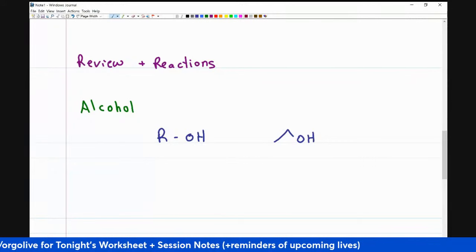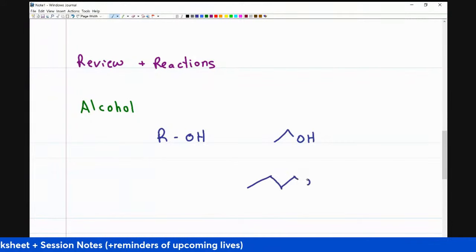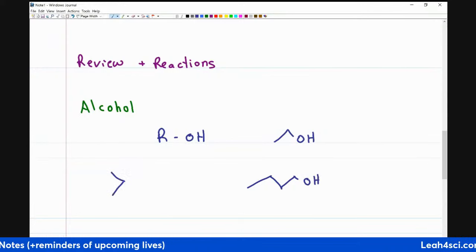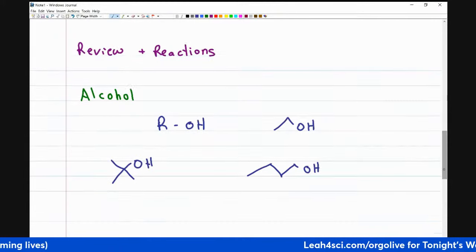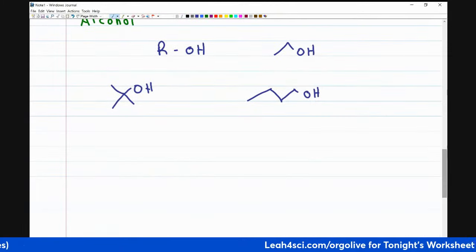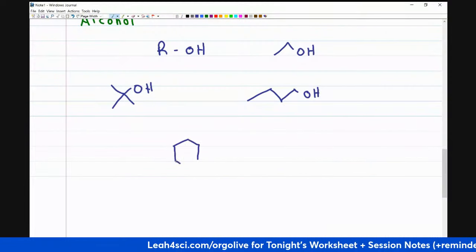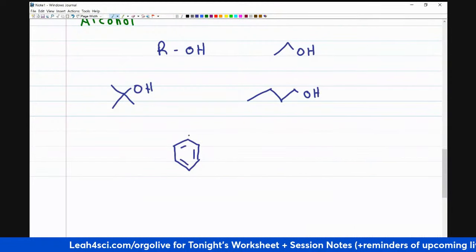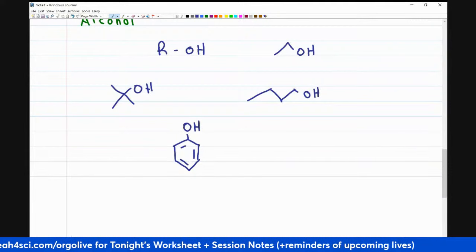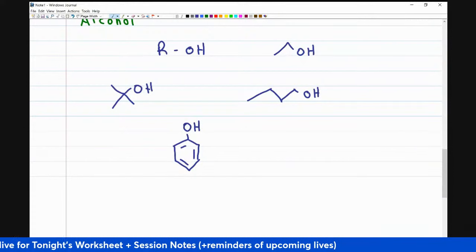But there are so many more. You can have linear alcohols, you can have branched alcohols — I'm drawing molecules you should recognize. You can also have molecules that have a lot more going on. For example, one that you'll see a lot is phenol, especially when you're reviewing resonance. This is the common go-to example.